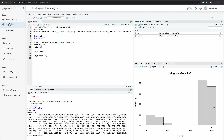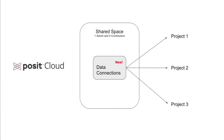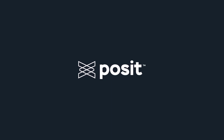The best part is, if you create a new project, you'll be able to access the same database connection. And if you change the information from your connection, it'll automatically update in new and existing projects once it's relaunched. I hope you enjoyed learning about the new Data Connections feature in Posit Cloud. You can visit posit.cloud to create a free account, connect to your databases, and begin exploring.